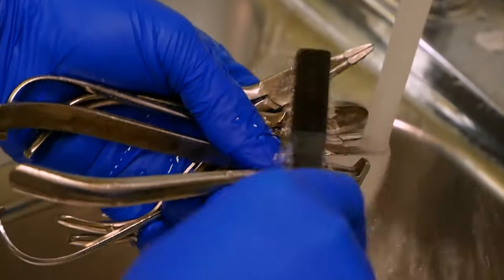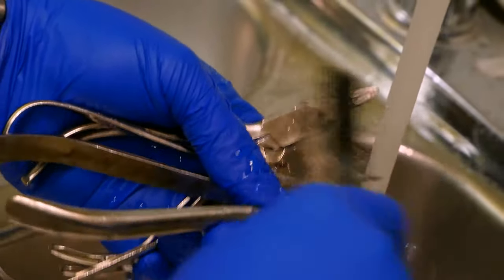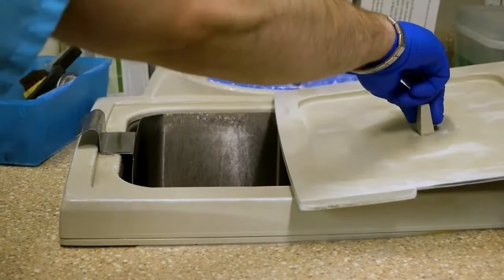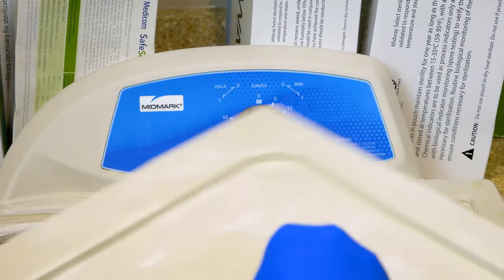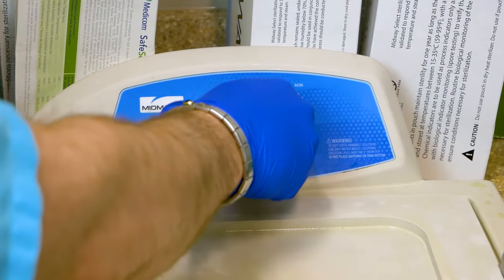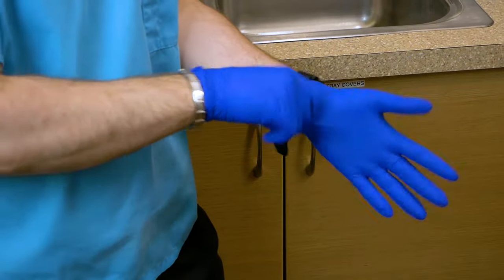During this step, the sterile tech will also use a brush to remove any debris from the instruments. Next, the sterile tech will turn on the ultrasonic and place all the tools inside. The timer will be set for 10 to 20 minutes. The sterile tech will switch gloves at this point to ensure that the instruments are not recontaminated.